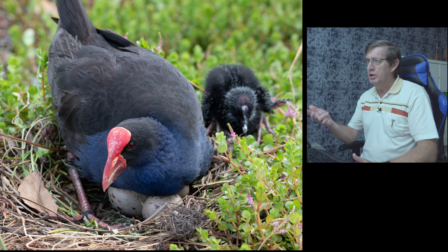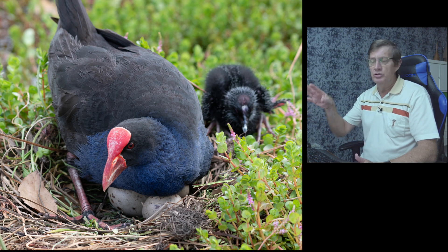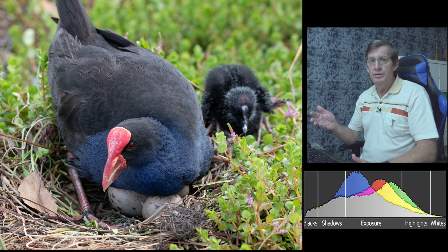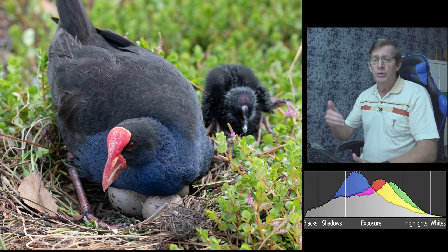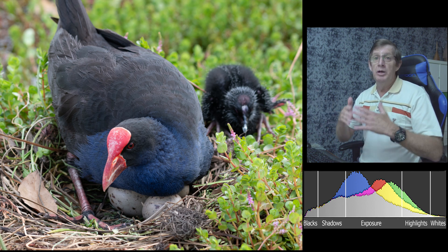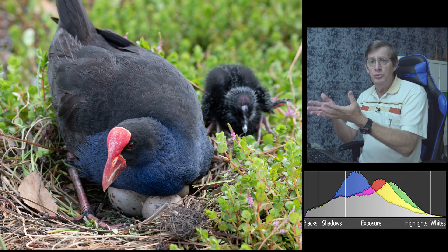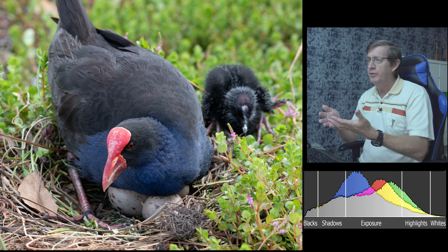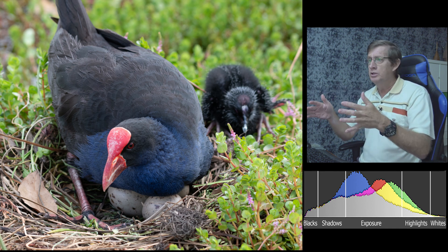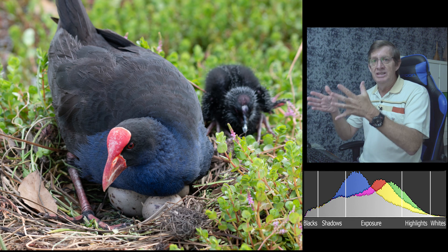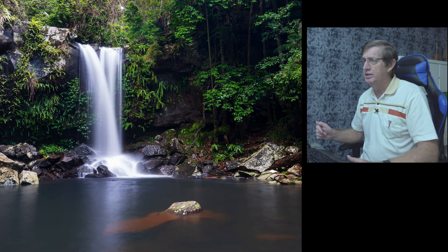This is a close-up shot of some water hens nesting — there's a little chick behind the parent and they're sitting on some eggs just about ready to hatch. It looks a very even image because it was taken on a very cloudy day. This was the only photo I could find going back more than two years with this sort of perfect histogram — a nice mountain shape in the middle. The only reason I got a histogram like that was because it was a very cloudy day, all the colors were quite muted, with no bright area and not too much dark area, so most of the information was in the center.